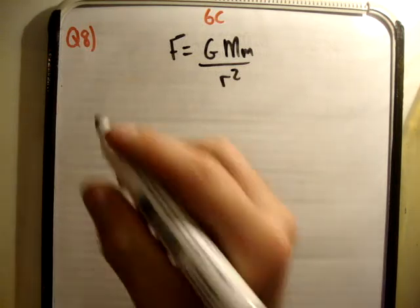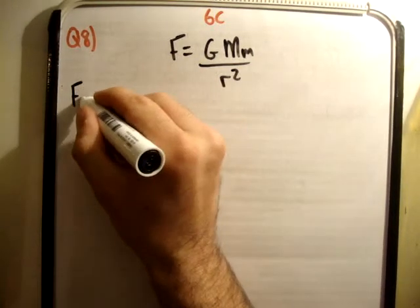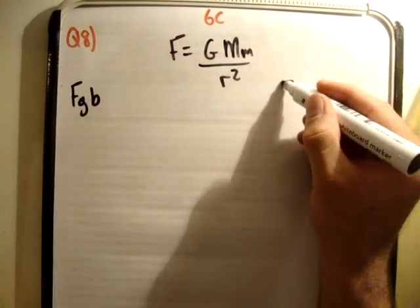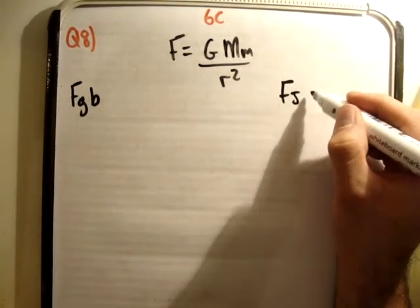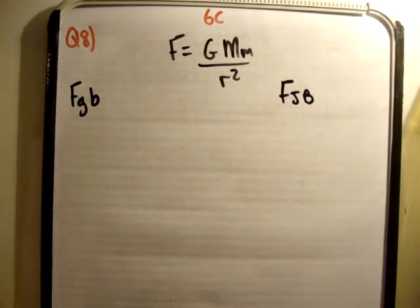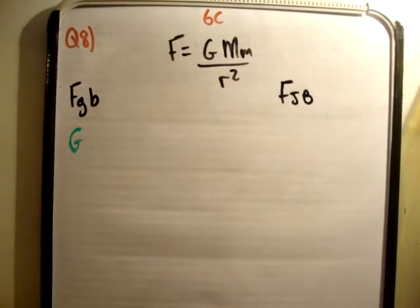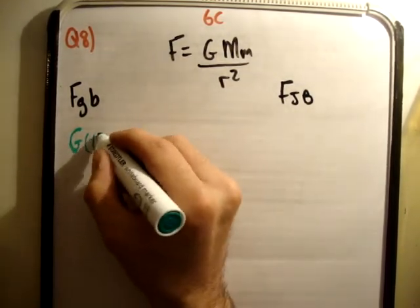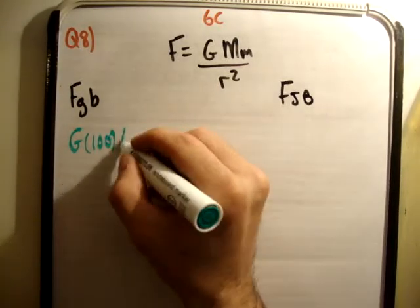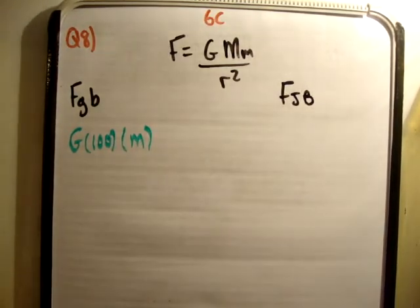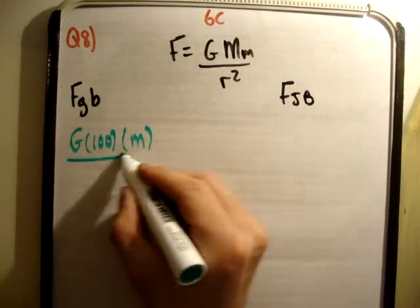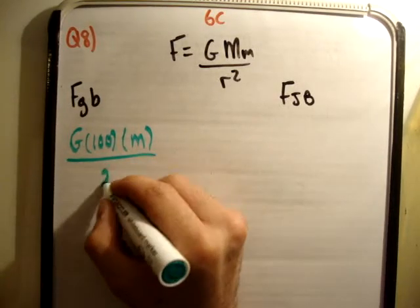So we need to work out two things: the force of the gynecologist on the baby and the force of the planet Jupiter on the baby. So let's apply Newton's law of gravitation. We're going to get G times the mass of the gynecologist, which is 100, times the mass of the baby. I'm just going to leave the mass of the baby at small m. Divide that by the radius squared, which is 2 squared.